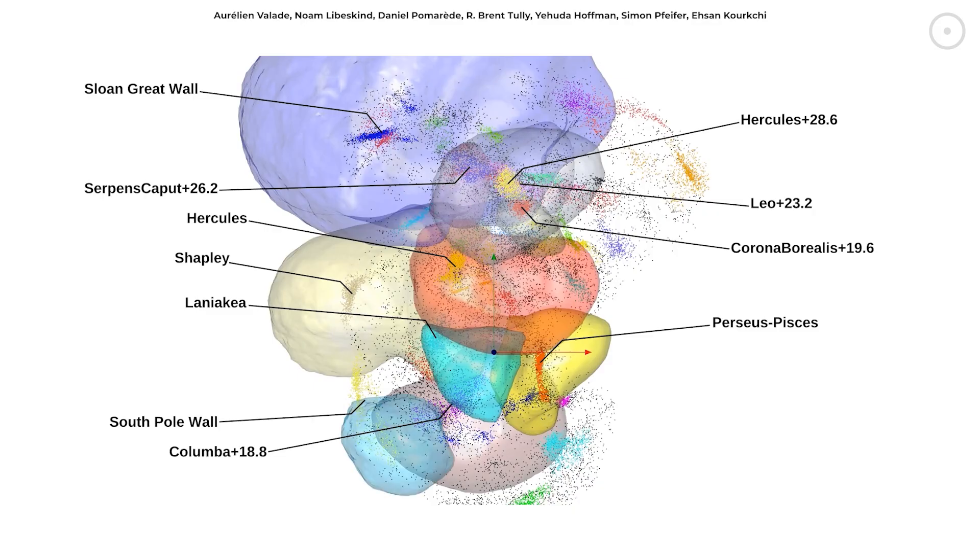We're talking about millions of galaxies, each containing billions of stars, all bound together by gravity into one incomprehensibly large structure. The Shapley concentration is around 10 times the volume of Laniakea.